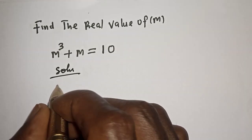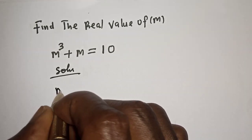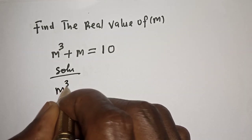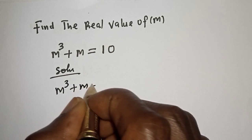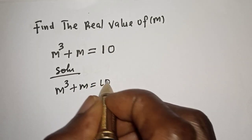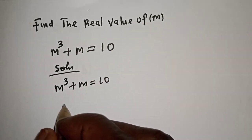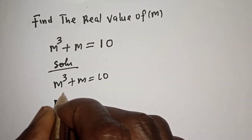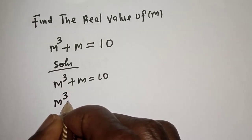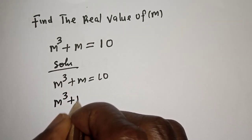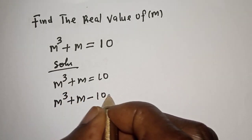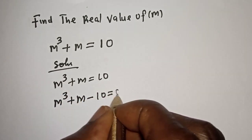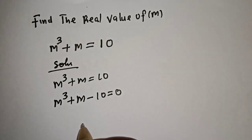The given equation is m raised to the power 3 plus m is equal to 10. Rearranging, m raised to the power 3 plus m minus 10 is equal to 0.